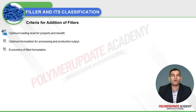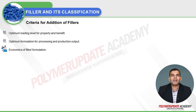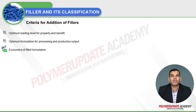Both property and benefit must be looked at when deciding upon the optimum loading level. The next consideration is the optimum formulation for processing and production output, and the third is the economics of the filled formulation.